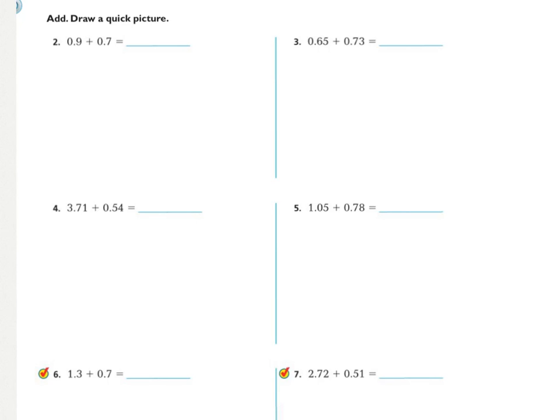Go ahead and work on the rest of your share and show. I want to see the quick pictures. I want to see you stacking your pictures. So, if this is 9 tenths, I'm going to have 9 tenths here on the top, and then I'm going to have 7 tenths on the bottom. And then I want to see you circling and regrouping as necessary. And then rewriting your final answer in digits on the line. But I must see the pictures.